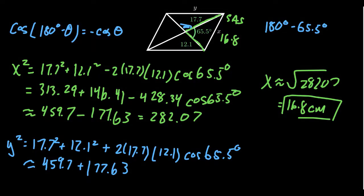And so in this situation, you end up with 637.33. And then to find Y, we have to take the square root of that. Y will be the square root of 637.33, which is approximately 25.2 centimeters.